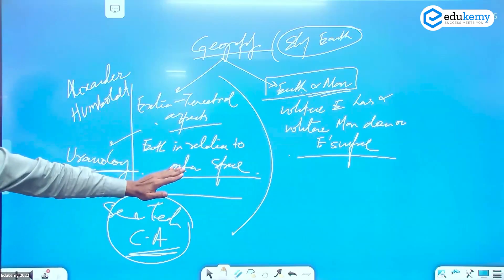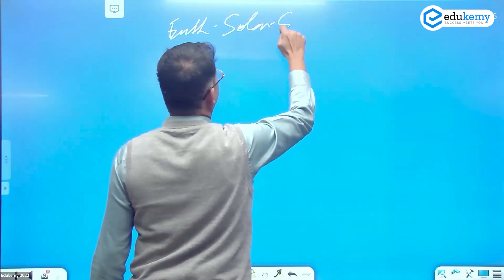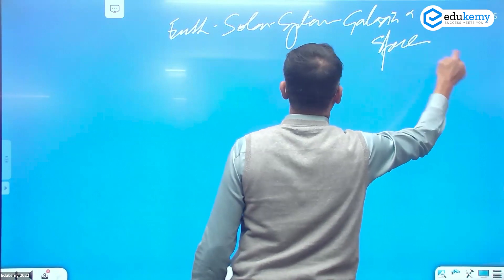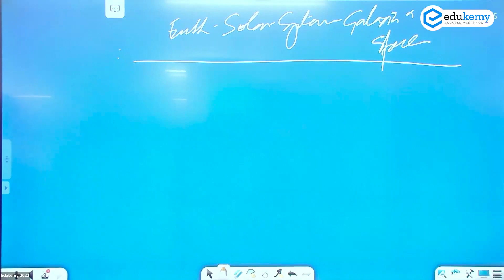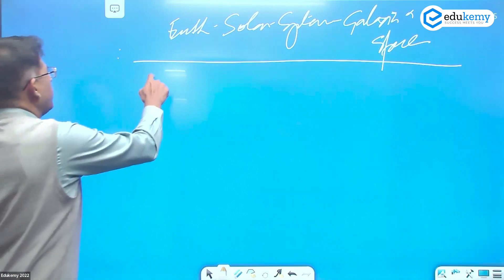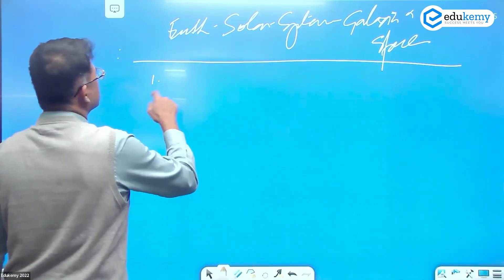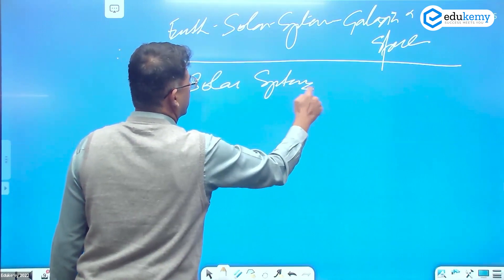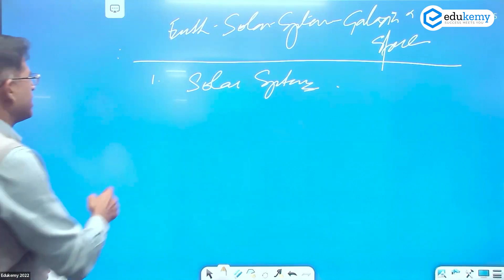Earth in relationship to outer space — earth, solar system, galaxies, and space. This is the theme I'm starting off with. Some quick facts: earth is part of a solar system.